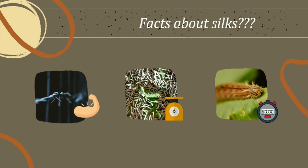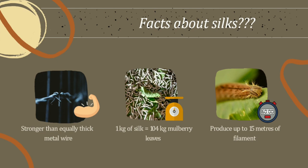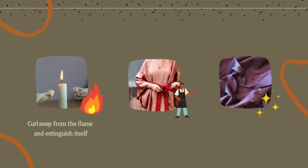We will start with six facts about silk. Did you know that silk rope is stronger than an equally thick metal wire? To produce one kilogram of silk, 104 kilograms of mulberry leaves must be eaten by 3,000 silkworms. And a single silkworm can produce up to 15 meters of filament in a minute.